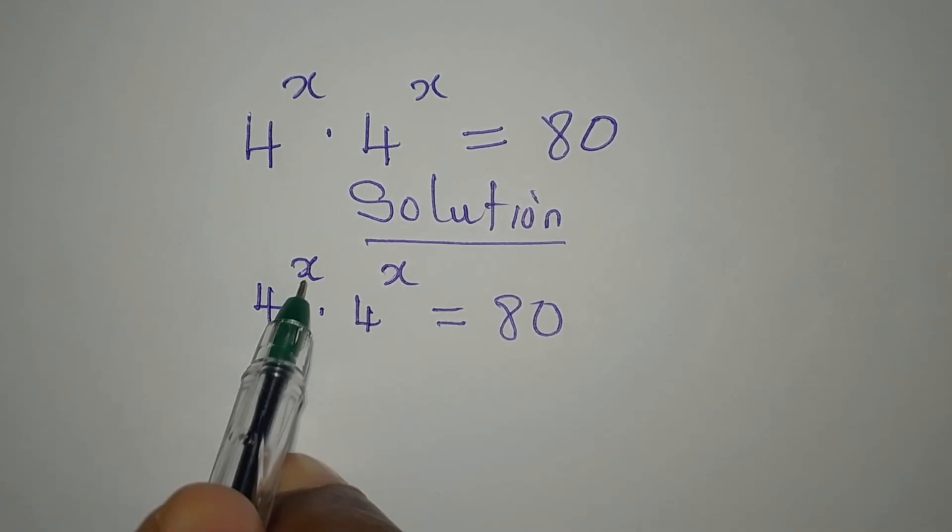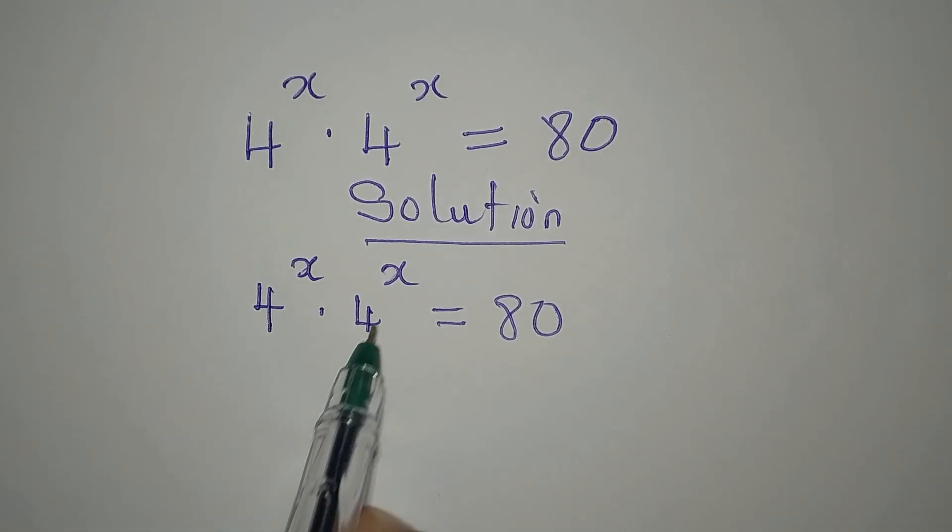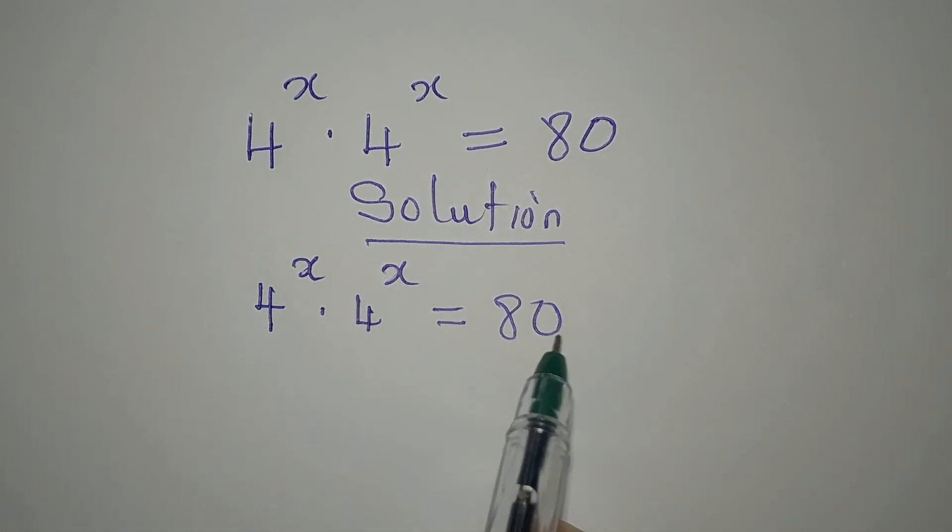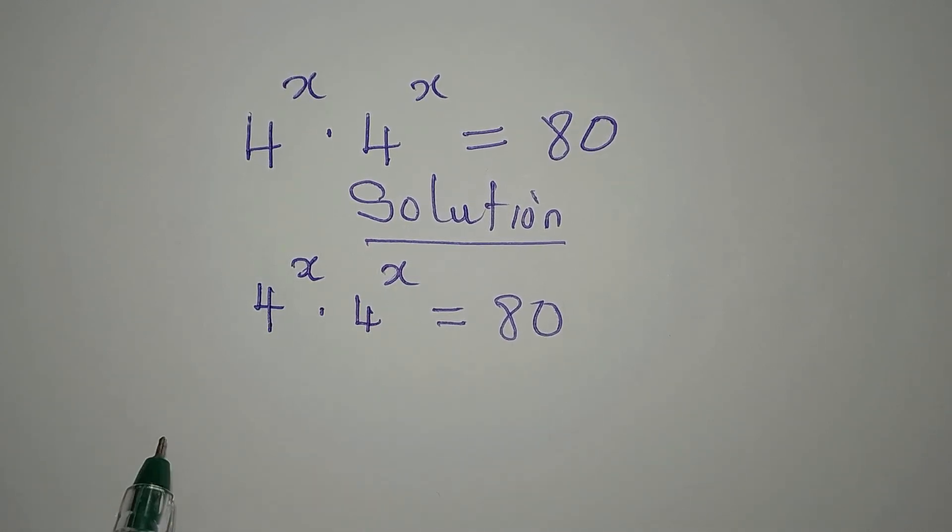We have 4 to the power of x times 4 to the power of x equals 80. Now this is multiplication and there are certain things you must know.